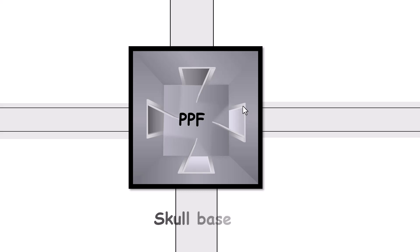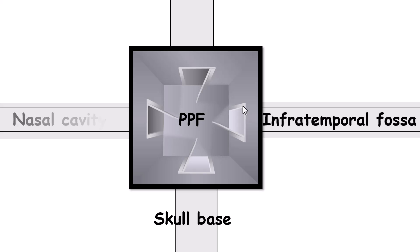The back hallway would be the skull base, to the lateral would be the infratemporal fossa, medially the nasal cavity, and anteriorly would be the orbit.